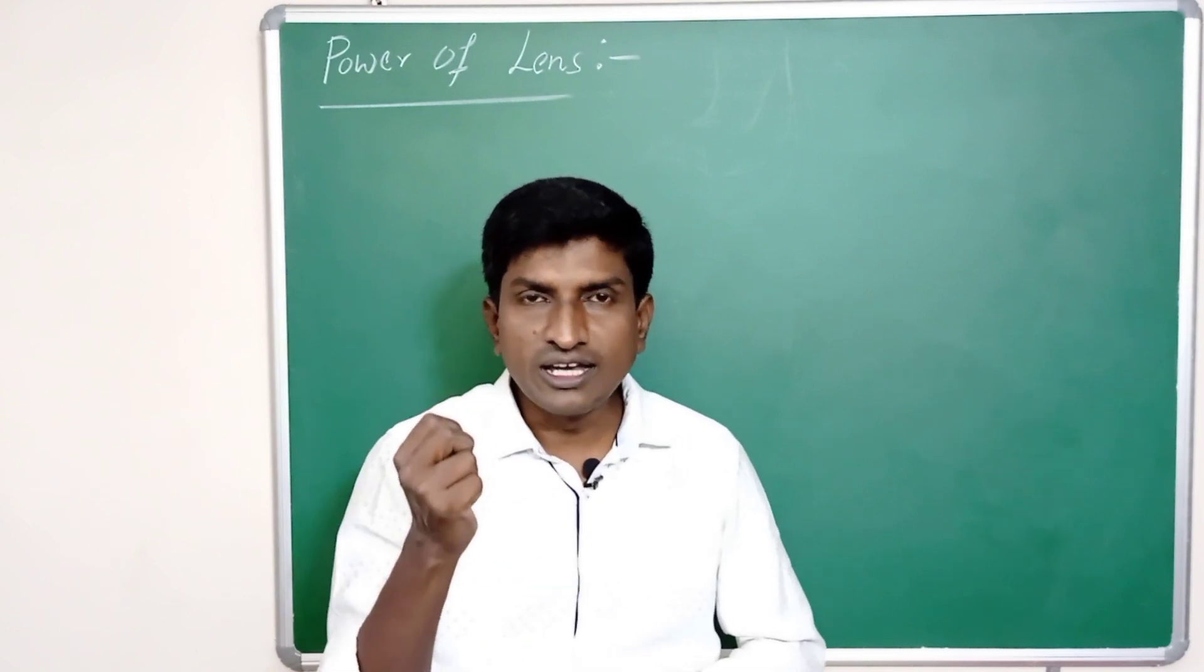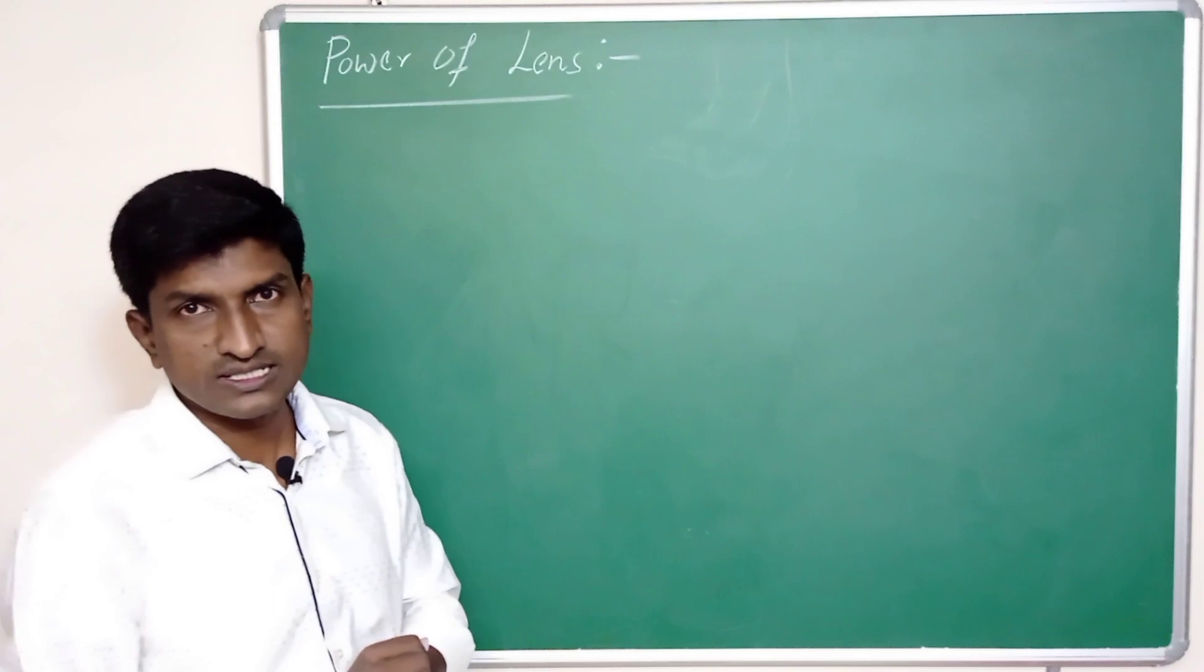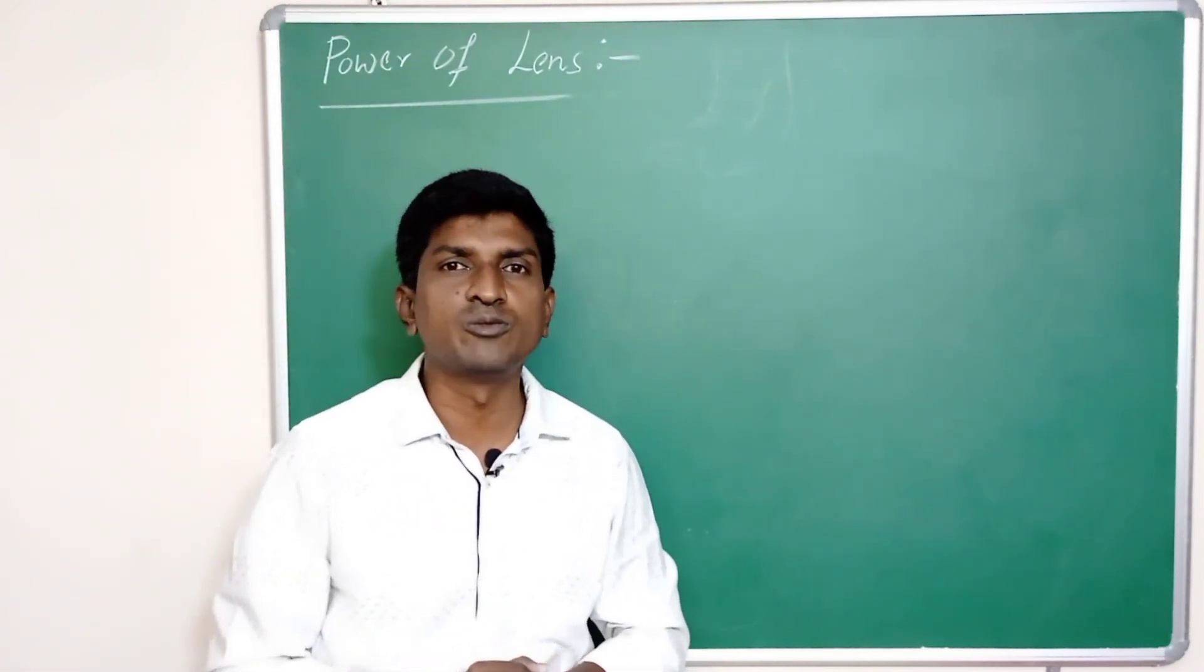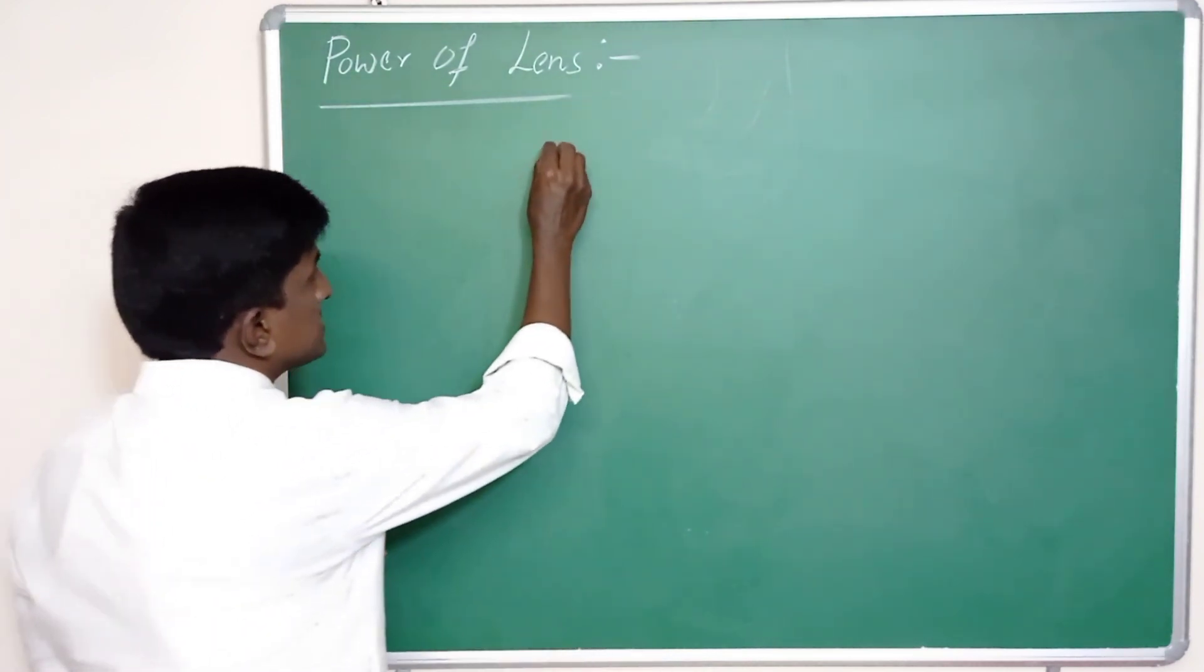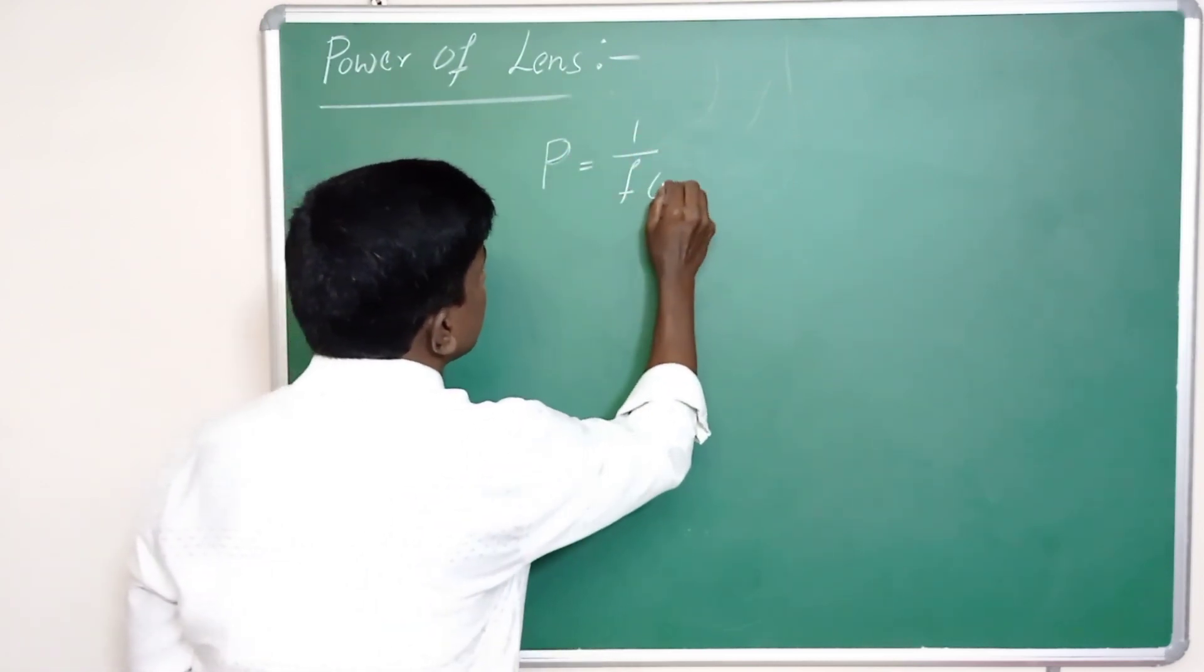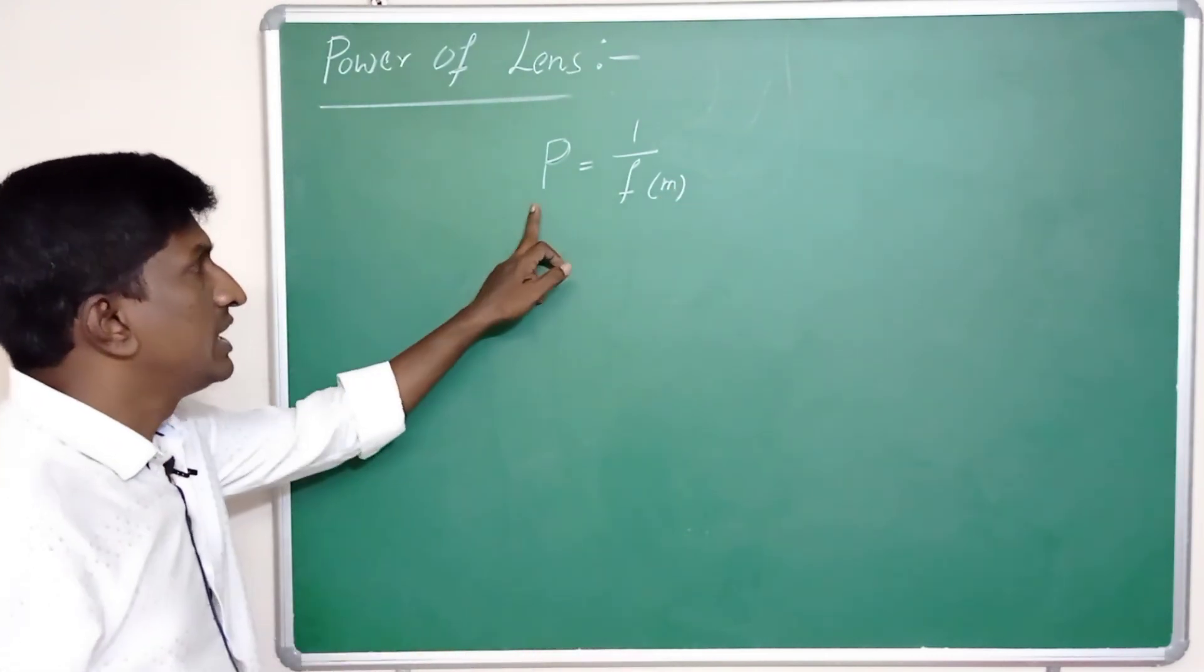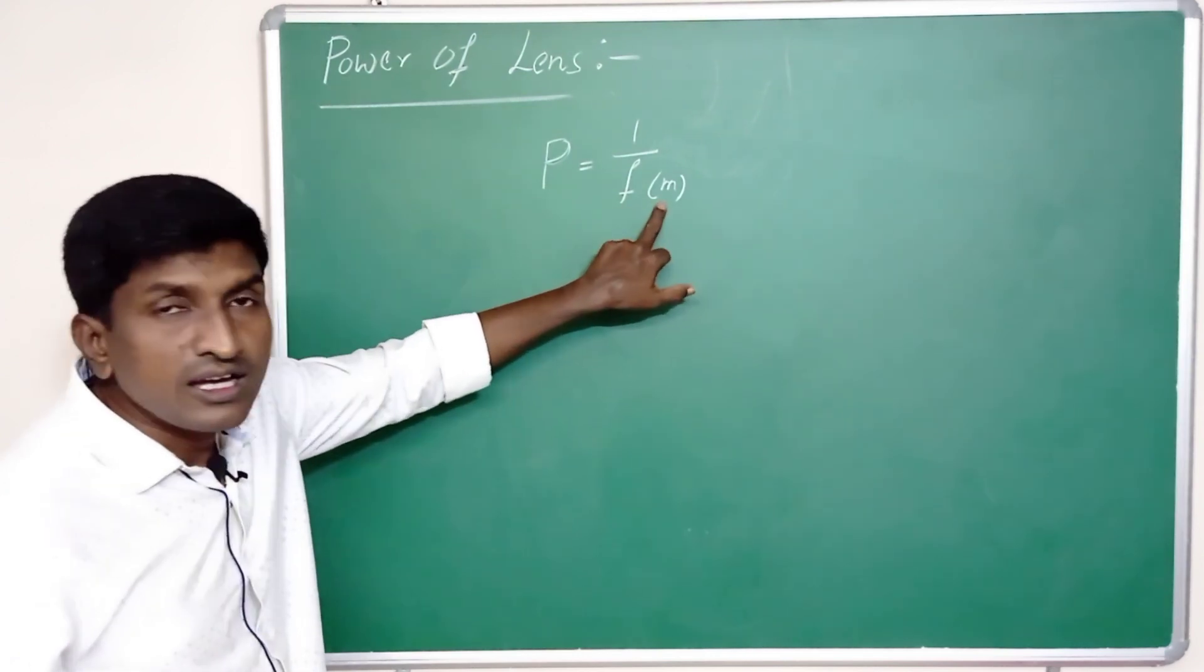The reciprocal of focal length of a lens is said to be power of lens. Power of lens is denoted with P, and it is the reciprocal of focal length. If the focal length is taken in meters, P equals 1 by f, where focal length is in meters.